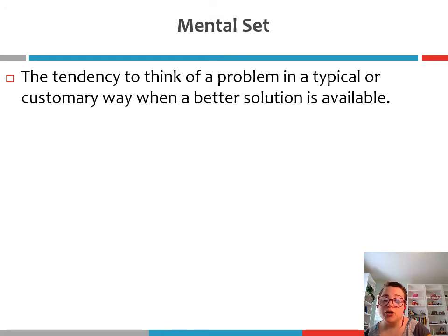The water jar problem illustrates something called mental set. Mental set is simply the tendency to think of a problem in a typical or customary way, even when a better solution is available. Let's look real quick at some experiments that gave this problem to participants to see how well they could solve it and what solutions they applied to it.